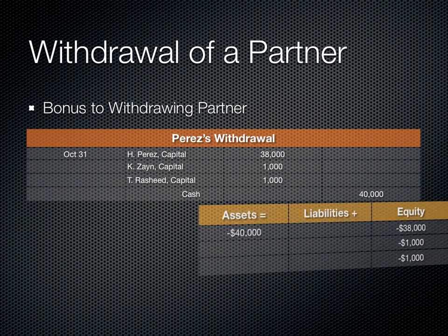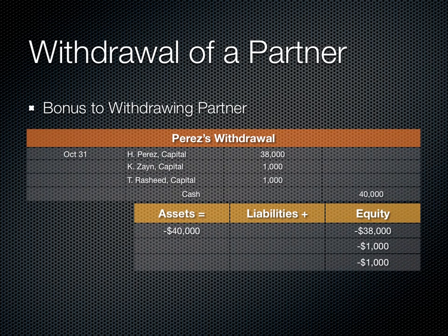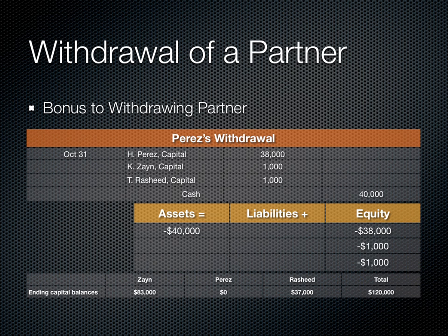Now let's assume that Zane and Rashid want to reward Perez for his contribution, or perhaps give him an incentive to leave, by giving him an extra $2,000 bonus as he leaves. In the journal entry, we debit Perez's capital, credit cash for $40,000, and debit the capital of both Zane and Rashid — because that bonus is actually coming out of their capital contributions.